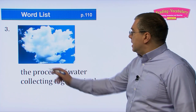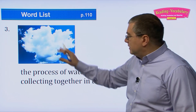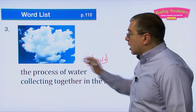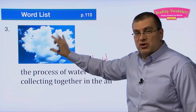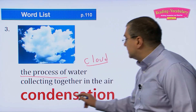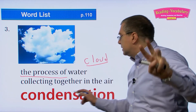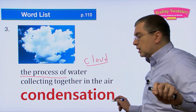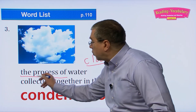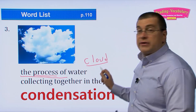Number three: the process of water collecting together in the air. You're probably thinking of a cloud, but we're talking about the process of forming that cloud. There's a special word for that — we call it condensation. Big words in this lesson! Let's say it slowly: con-den-sa-tion... condensation. Condensation is the process of water collecting together in the air, and clouds are formed because of condensation.